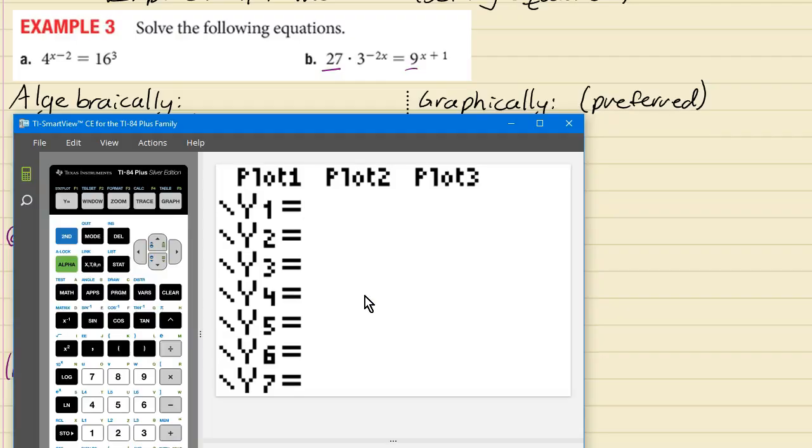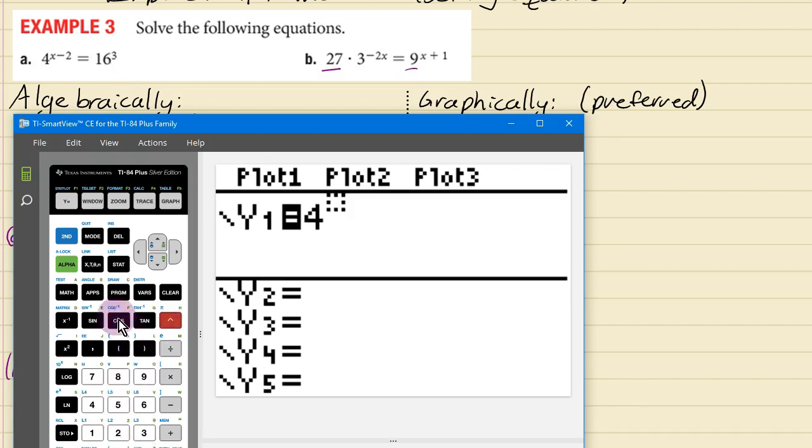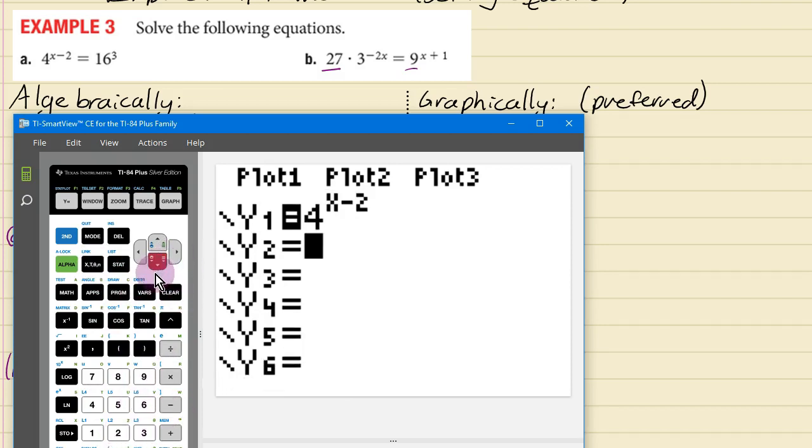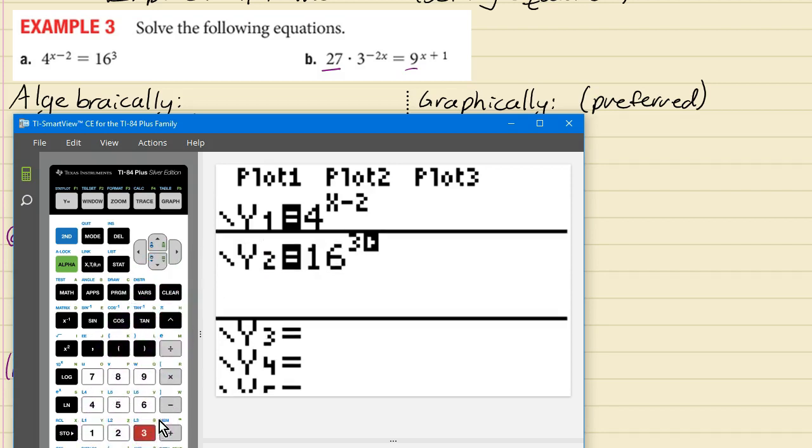So to solve this by graphing we're going to graph y equals 4 to the power x minus 2 and also y equals 16 to the power 3. And we want to see what value of x you can plug in makes the y coordinates the same which is going to look like on the graph a point where they intersect.